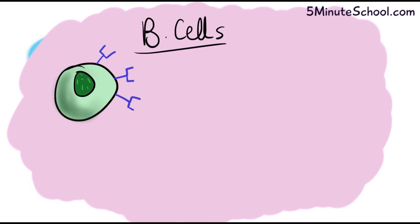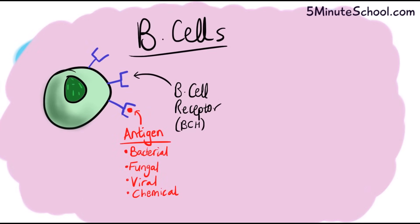On the surface of B cells there are receptors called B cell receptors, which have a function of binding onto antigens. If you don't know what an antigen is, imagine it's like a small chemical or molecule on the surface of harmful bacteria or pathogens — or it doesn't have to be on the surface of a pathogen, but the body recognizes it as a foreign substance.